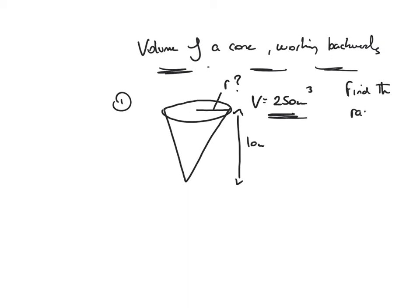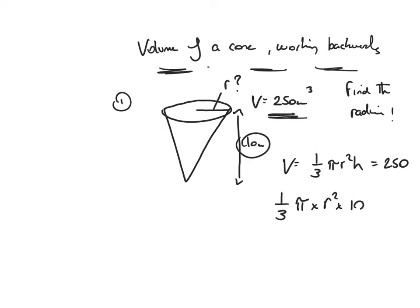The first thing I do, as I would if finding the volume, is write down the formula: one third pi r squared h. This time the volume has been given to me — it's equal to 250. I can also note that r squared is what I'm looking for, and the height is 10. So one third times pi times r squared times 10 is equal to 250.